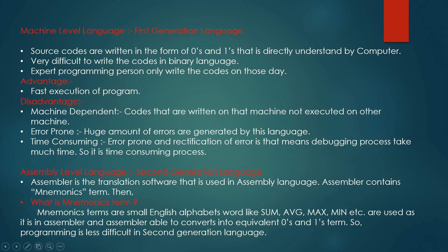The second generation is assembly-level language. It is called assembly-level language because assembler software was developed during this generation. The assembler is a translator that contains simple mnemonic terms. Mnemonic terms are small English alphabet words like sum, average, max, mean — terms students are already familiar with. These mnemonic terms are used in the assembler, and the assembler converts them into the equivalent zeros and ones. So programming is less difficult in the second generation.